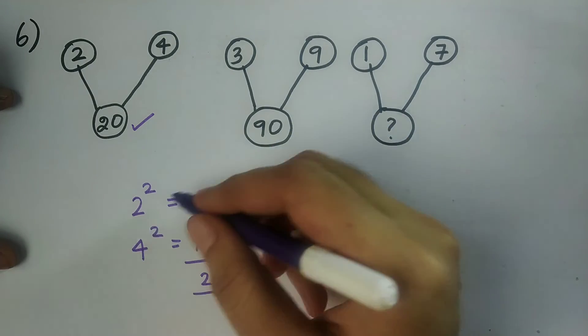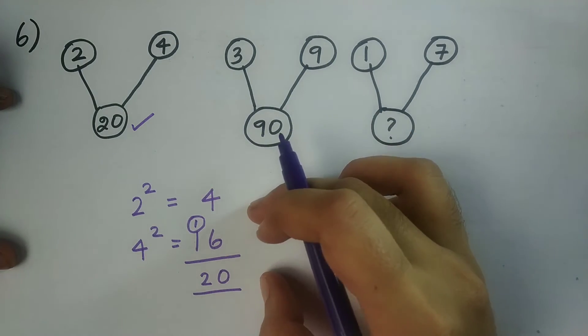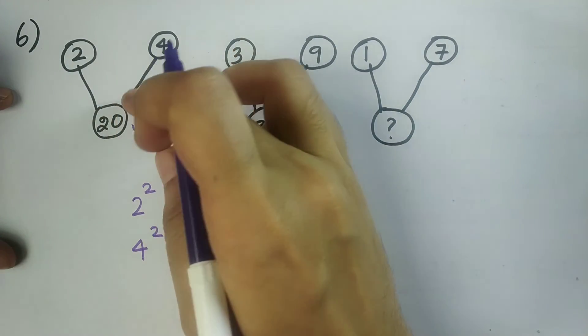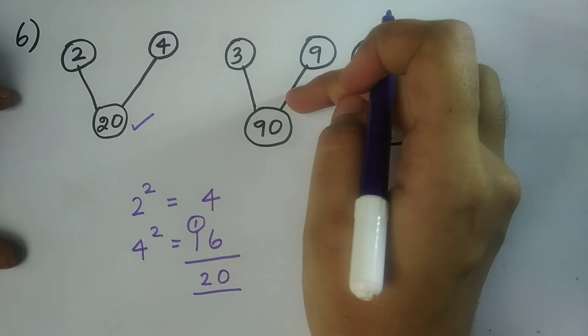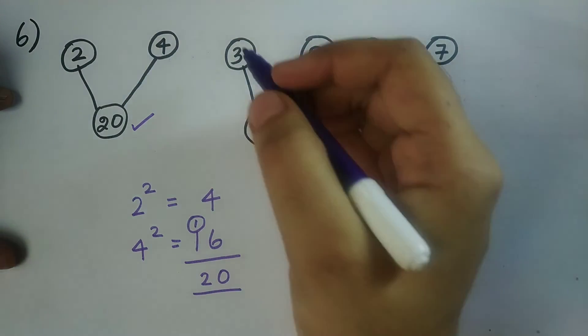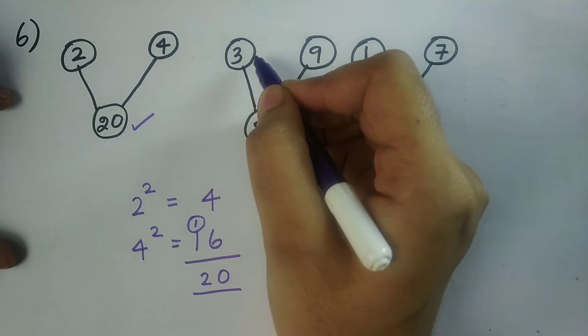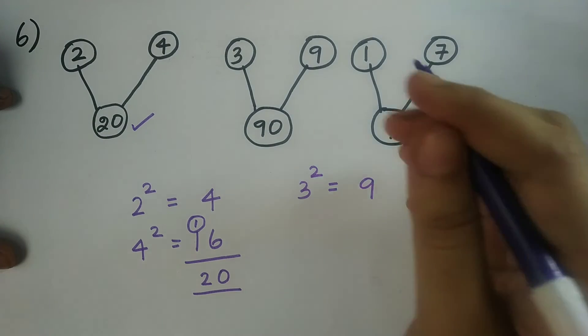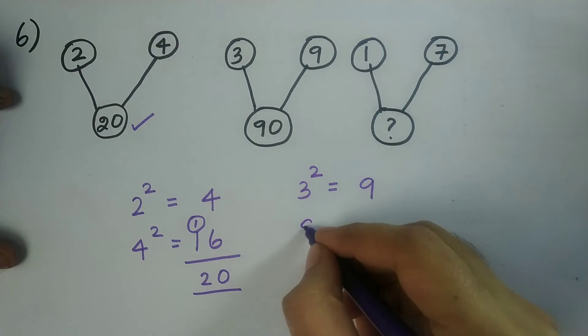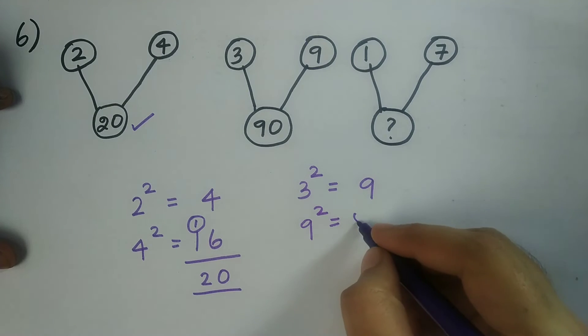So this logic is holding good for this first figure. Now let us solve using the same logic for the second figure. I should square the numbers on top. Over here I am having 3. So 3 square is equal to 9. Next I am having 9. So 9 square is equal to 81.